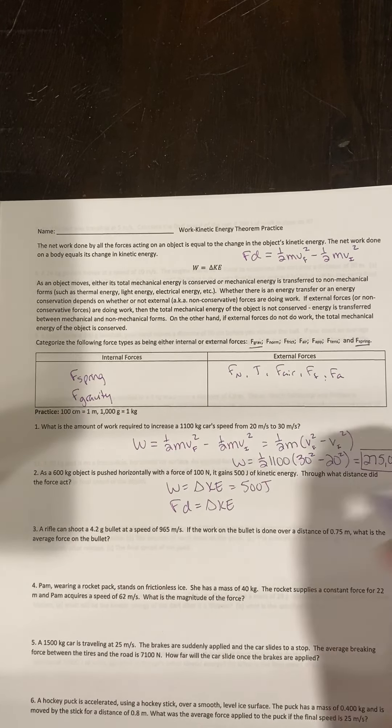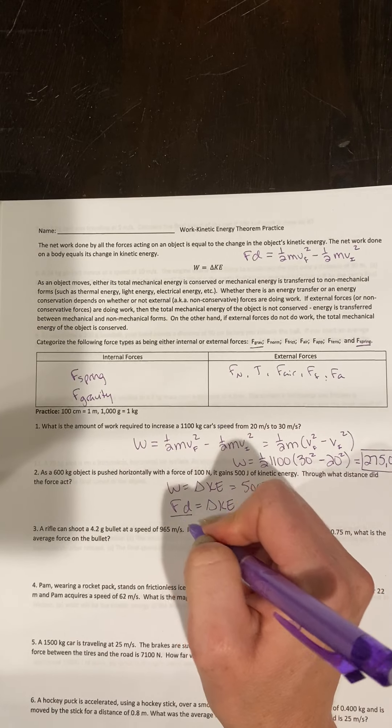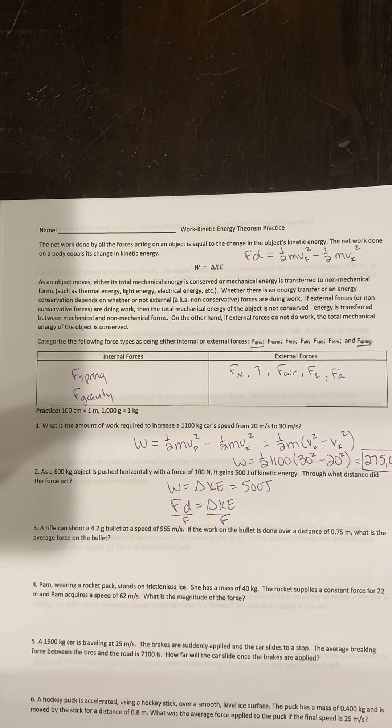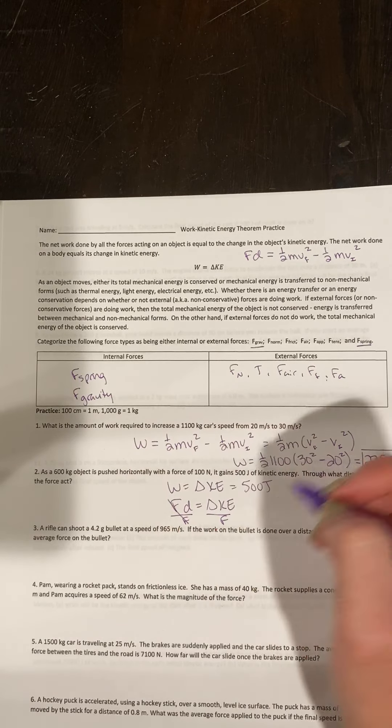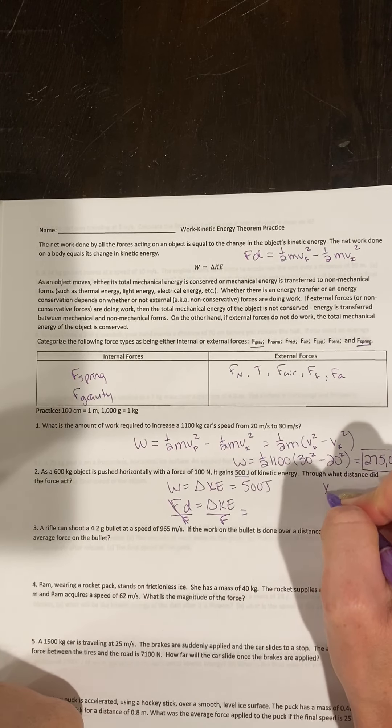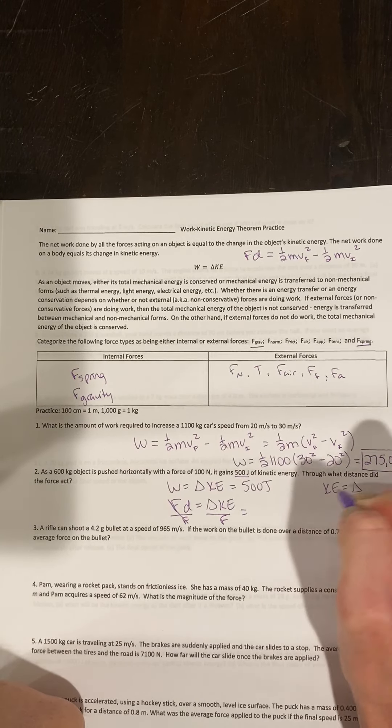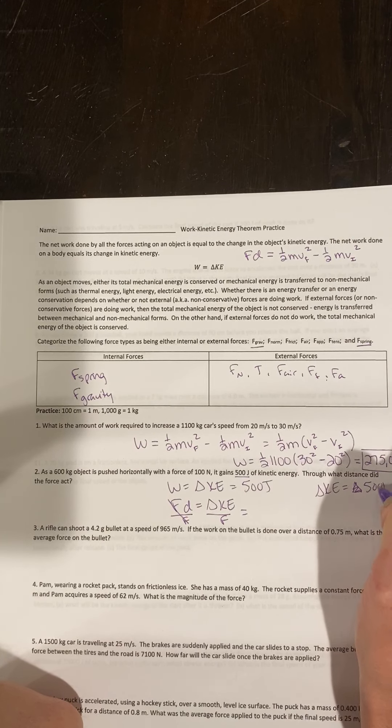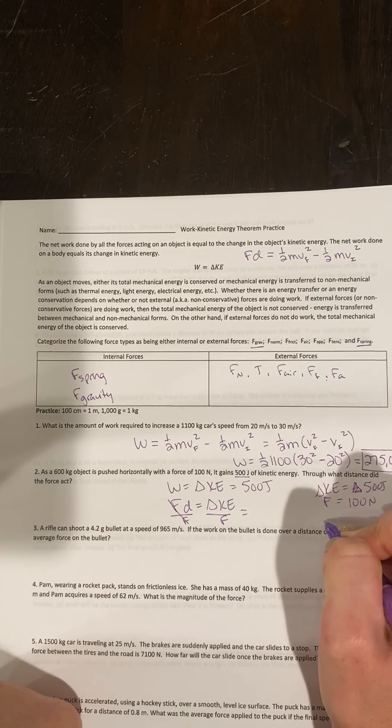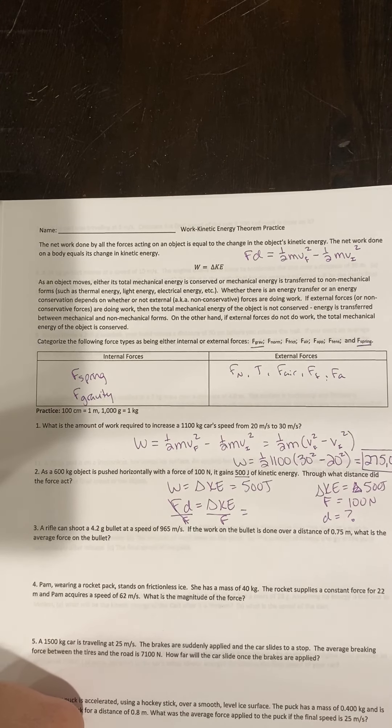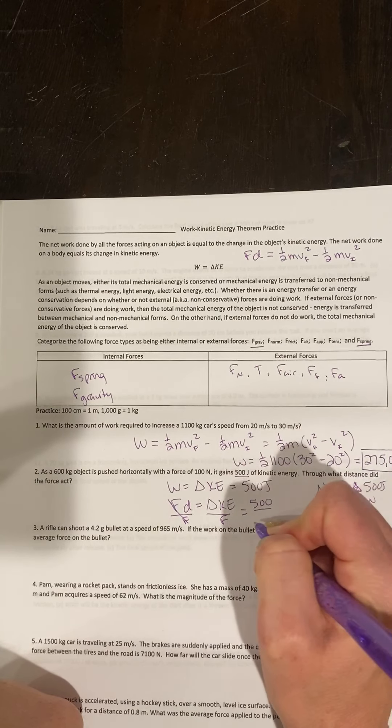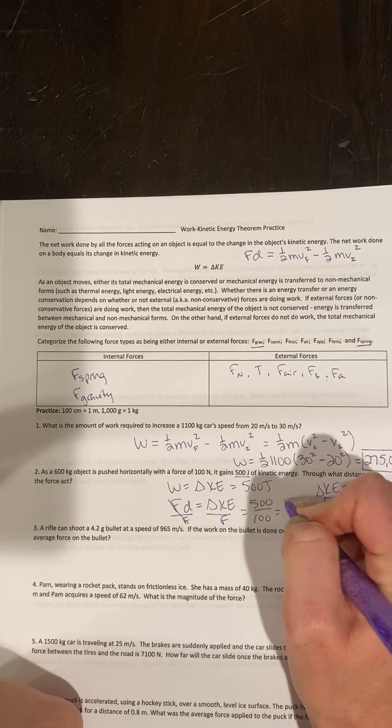If I want my distance and I've been given my force, I'll just divide both sides by my force to give me my displacement. So my change in kinetic energy, 500 joules, divided by force. I'll take the 500 divided by 100 to give me 5 meters.